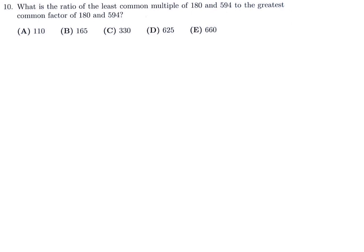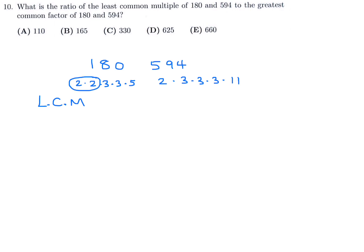What is the ratio of the least common multiple of 180 and 594 to the greatest common factor of 180 and 594? To find the LCM, break into prime factors: 180 = 2×2×3×3×5 and 594 = 2×3×3×3×11. For the LCM, take the maximum occurrences of each prime: 2×2 for the 2s, 3×3×3 for the 3s, then 5 once and 11 once.